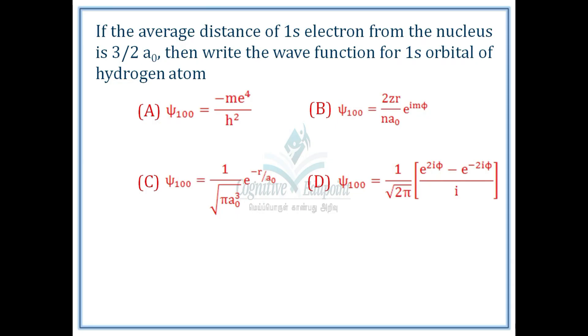If the average distance of 1s electron from the nucleus is 3/2 a0, then write the wave function for 1s orbital of hydrogen atom.